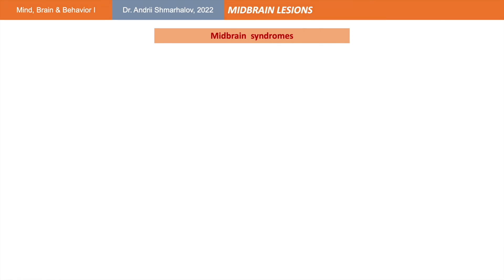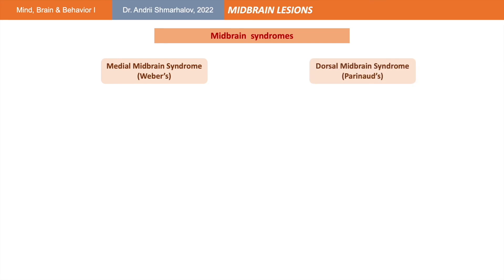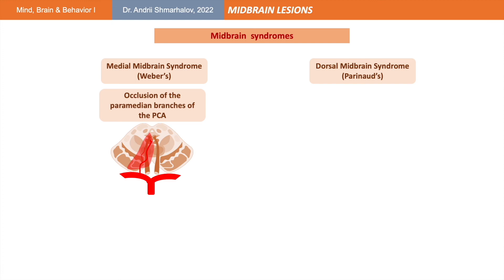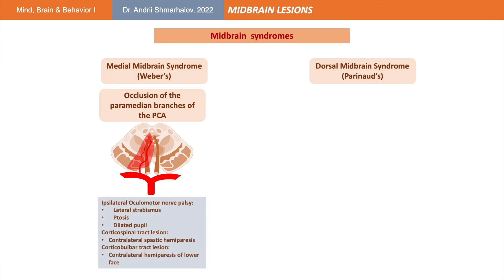Finally, we briefly discuss the midbrain lesion syndromes. There are two most common syndromes associated with the midbrain: the medial midbrain syndrome, also known as Weber syndrome, and the dorsal midbrain syndrome, also known as Parinaud syndrome. The medial midbrain syndrome is associated with occlusion of the paramedian branches of the posterior cerebral artery. Most of these symptoms will be similar to the medial pontine or medial medullary syndrome, demonstrated by the involvement of the corticospinal tract or corticobulbar tract. The distinguishing feature for this syndrome is the lesion to the motor and parasympathetic nuclei of the oculomotor nerve, which results in lateral strabismus as well as ptosis and a dilated pupil.